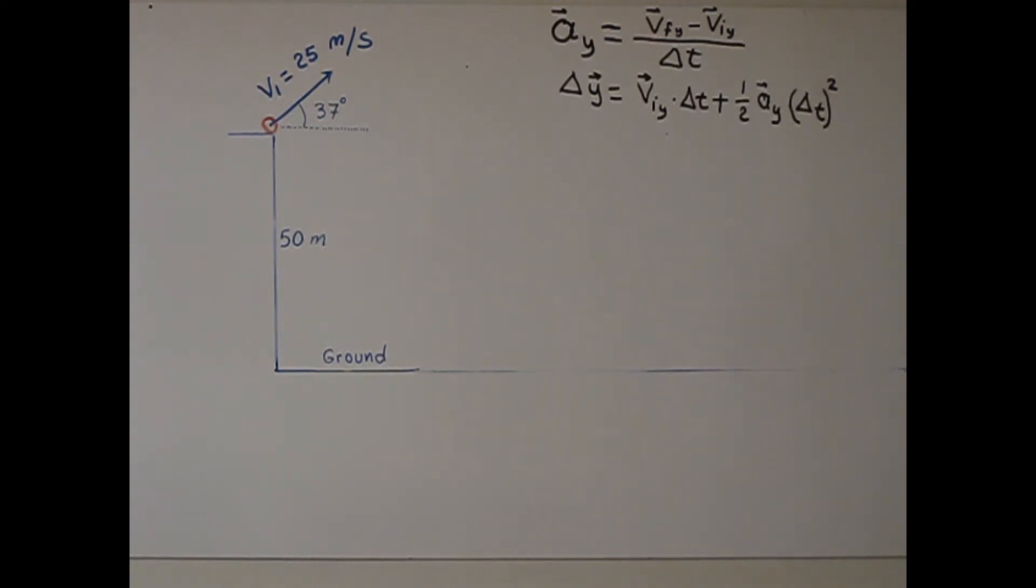Projectile motion is two-dimensional with a constant horizontal velocity and constant vertical acceleration due to gravity. We should work on horizontal and vertical component. Okay, horizontal component is net force. Horizontal net force is zero.